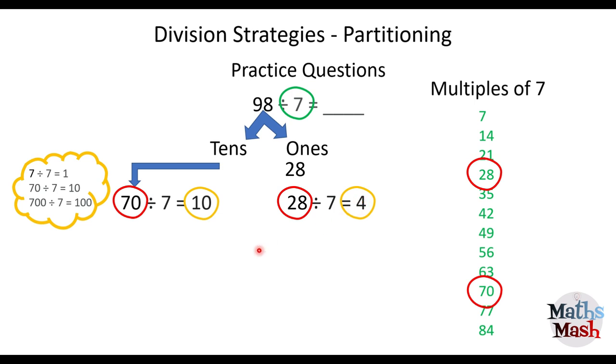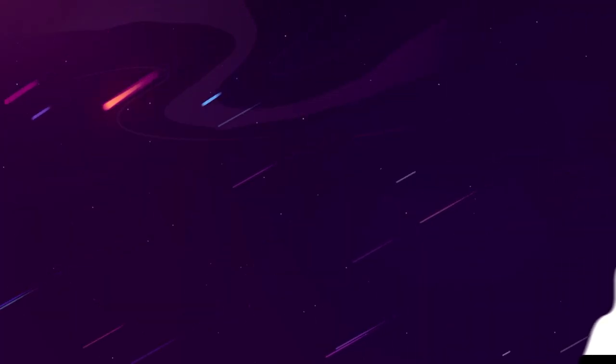And I take the 10 and I take the 4. And I add them together. It gives me 10 plus 4. That's going to give me 14. Okay, so 98 divided by 7 is 14.